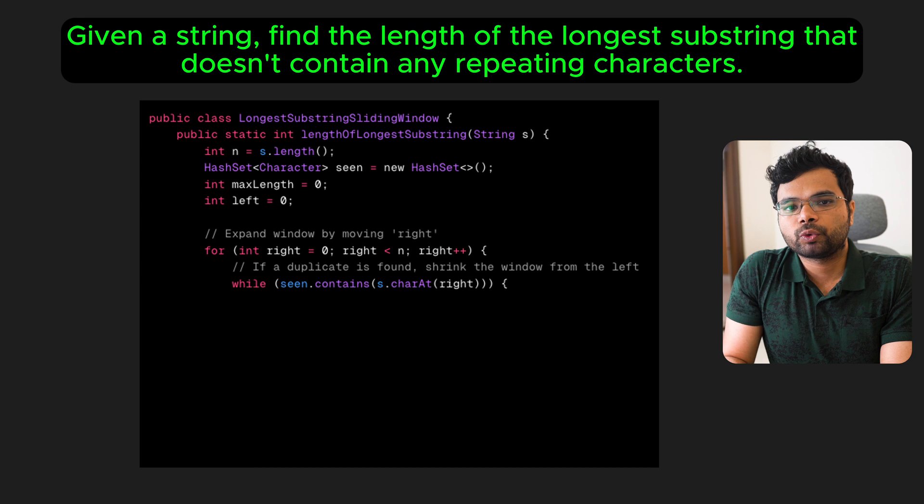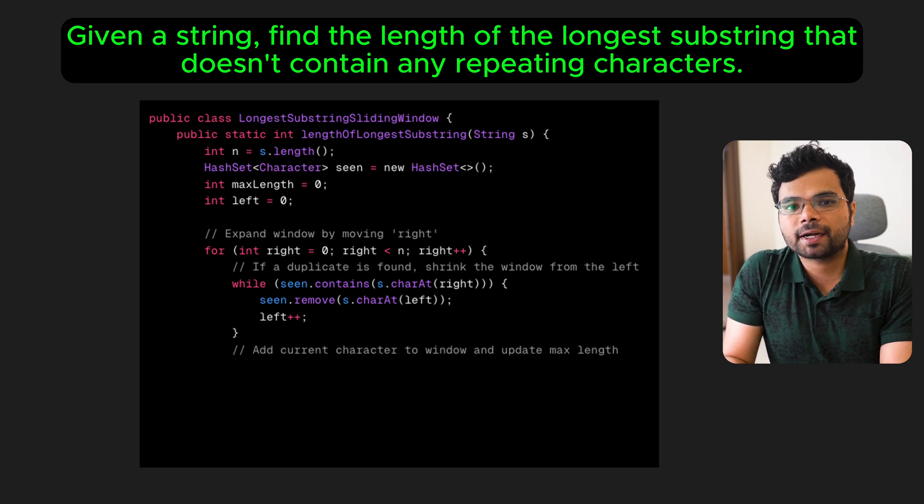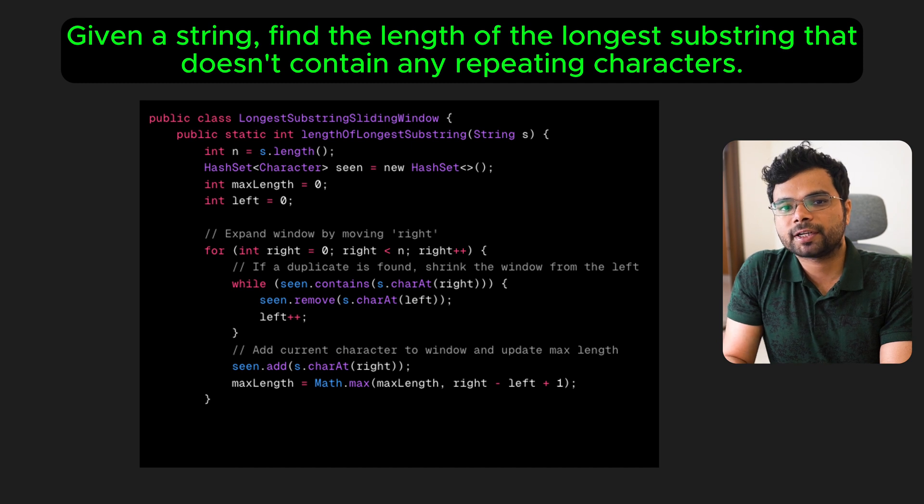If duplicate is found, which means character already exists in the set, shrink the window from the left by removing the leftmost character from the set and incrementing the left pointer. After adjusting the window, add the current character to the set. Calculate the length of the current substring and update maxLength if necessary.